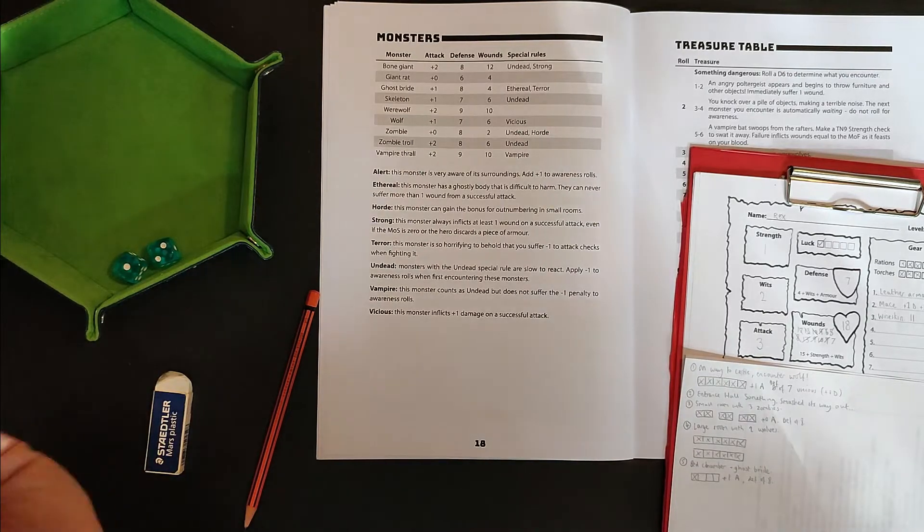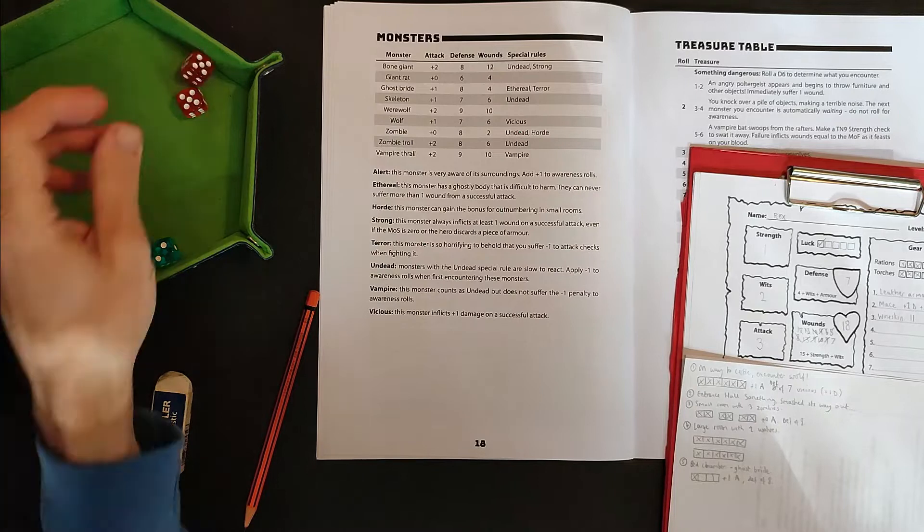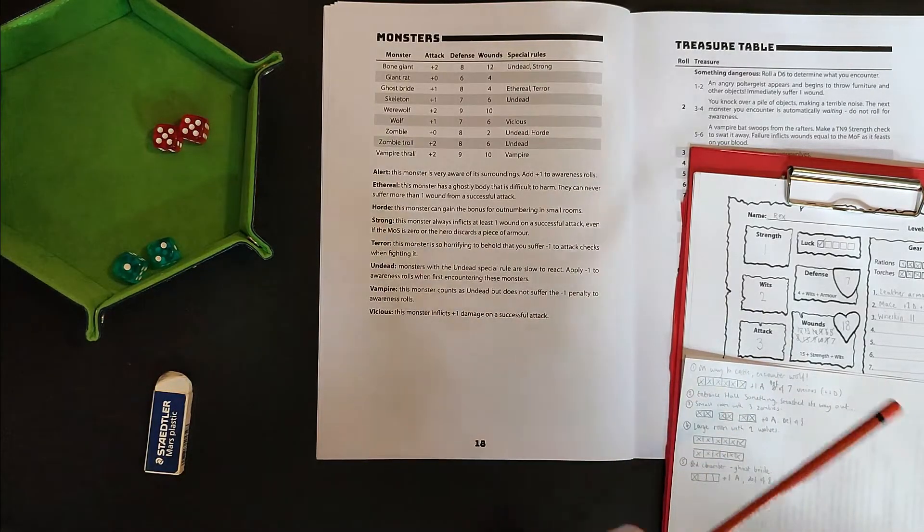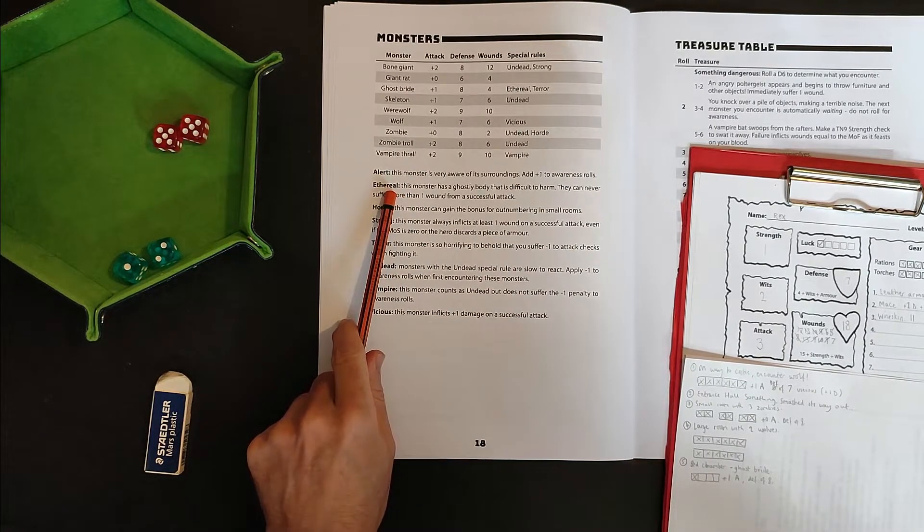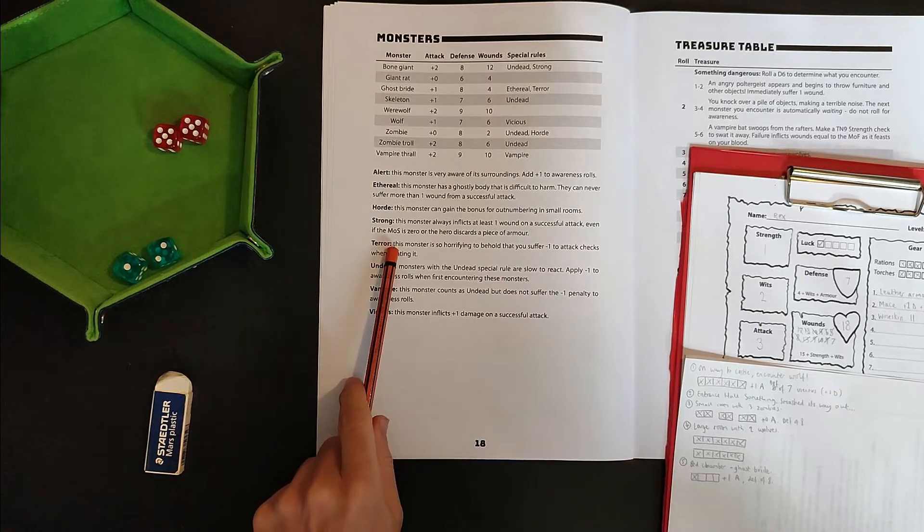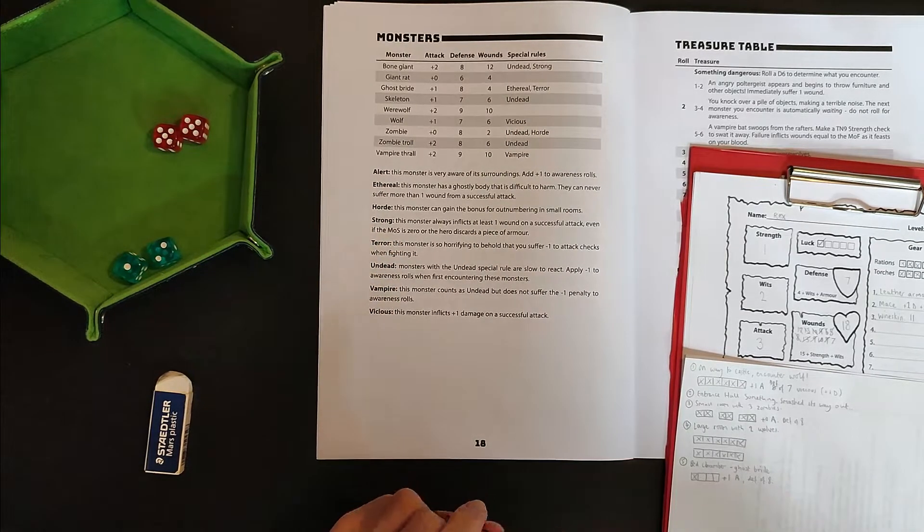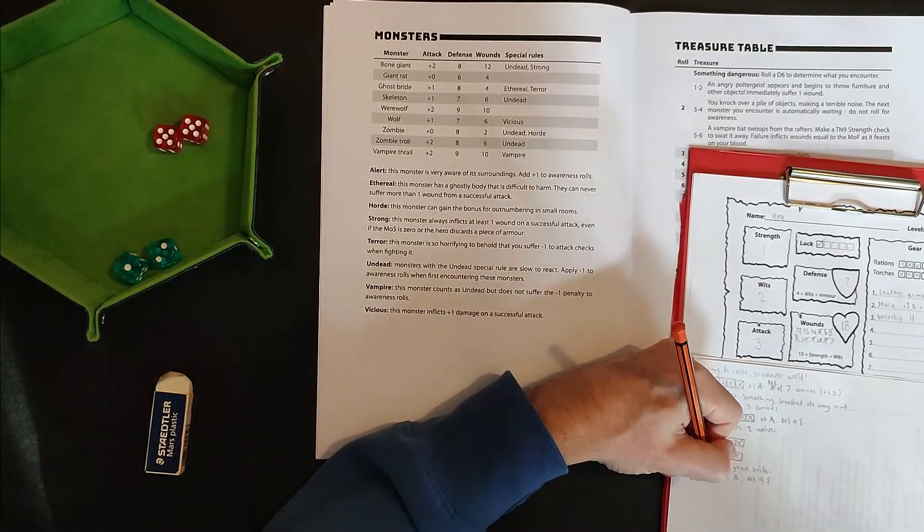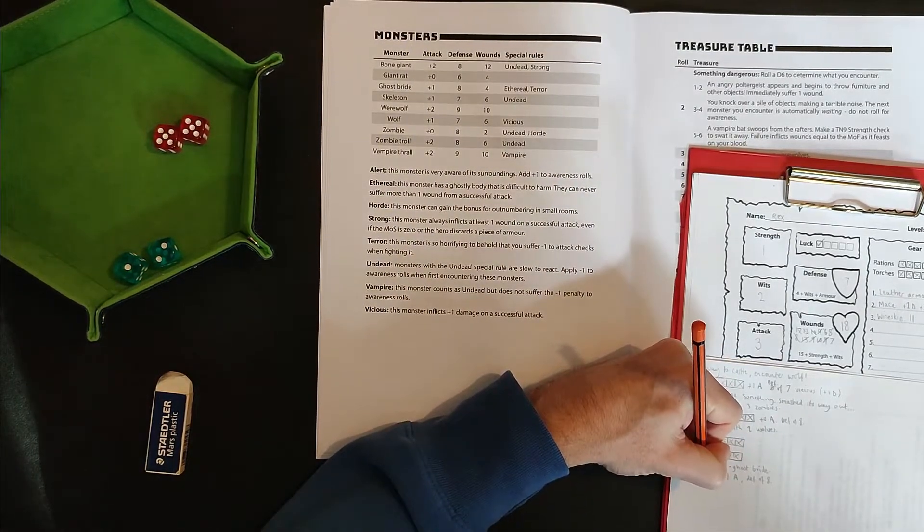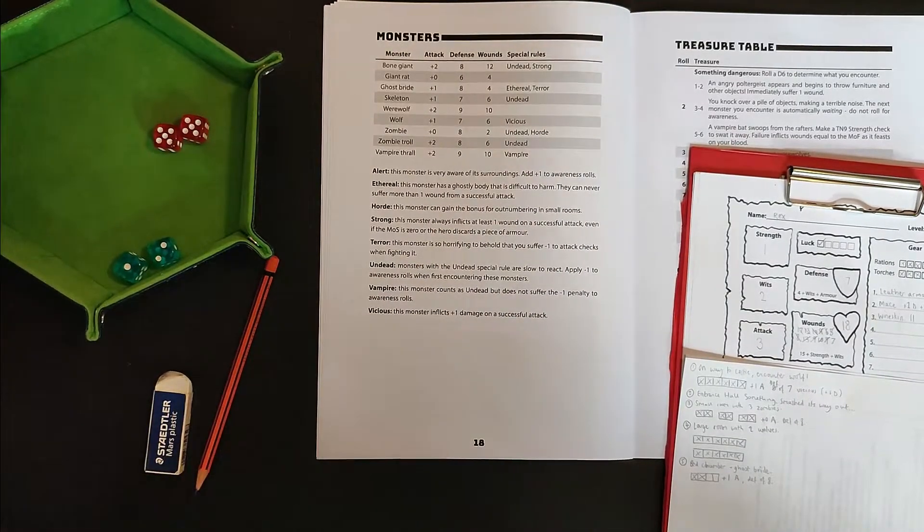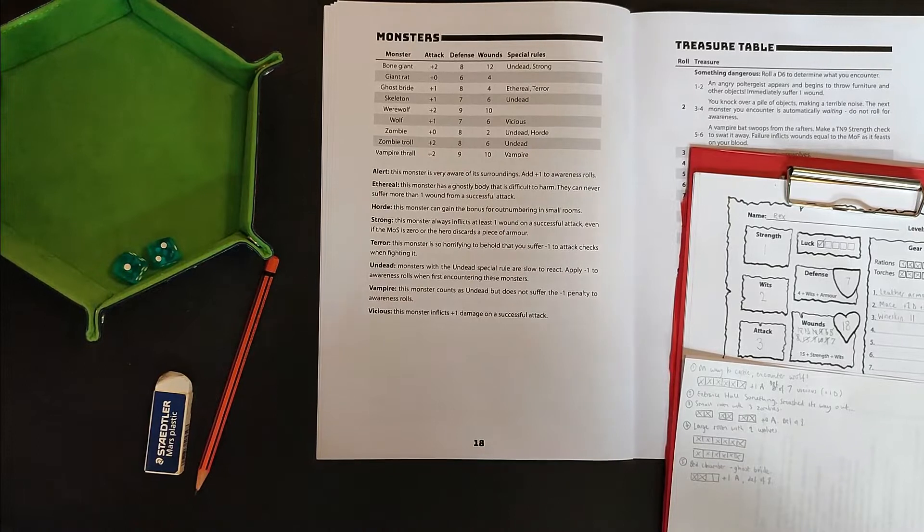That's better. 10, 11, 12, 13. Minus one for the ethereal. No, sorry, for the terror is down to 12. But that's enough because the defense of the ghost bride is only eight. So there we go. Half dead. Ghost bride attacks me back. Good. There we go. Now I'm going to attack again.